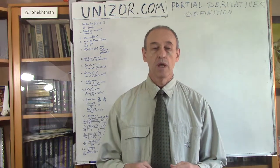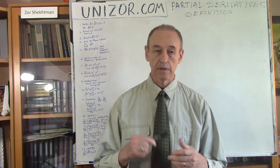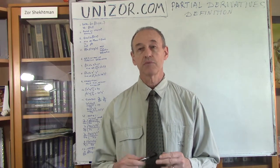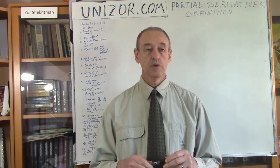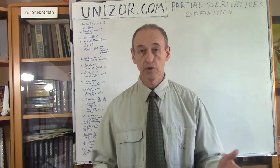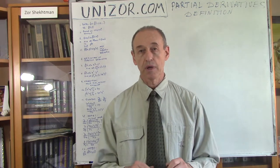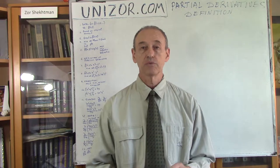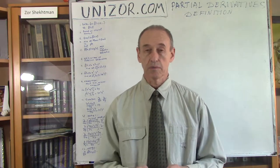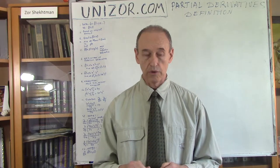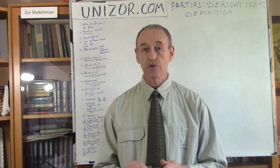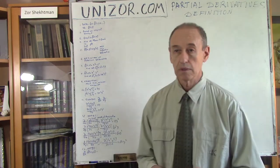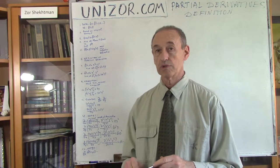Basically, a partial derivative is some kind of an operation similar to a regular derivative, but for functions of more than one argument. You can take a partial derivative of a function of two arguments, three arguments, etc. We will mostly be concerned about two arguments, because three and more are absolutely analogous. So almost all examples will be related to functions of two arguments. The theme of this lecture is the partial derivative of a function of two or more arguments.